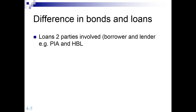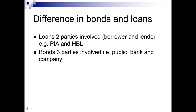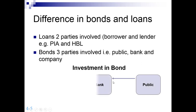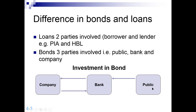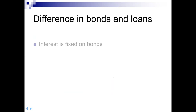There is a difference between bonds and loans. In a loan, two parties are involved; in bonds, three parties are involved. With a loan, you or your company go to the bank, deal with them directly, and negotiate the amount needed — just two parties. With a bond, three parties are involved: the public, the bank, and the company. The company needs funds, the bank provides services as an intermediary, and the public invests to get interest. The company pays interest back to the bank, and the bank gives it to the public either in cash or by crediting their account.